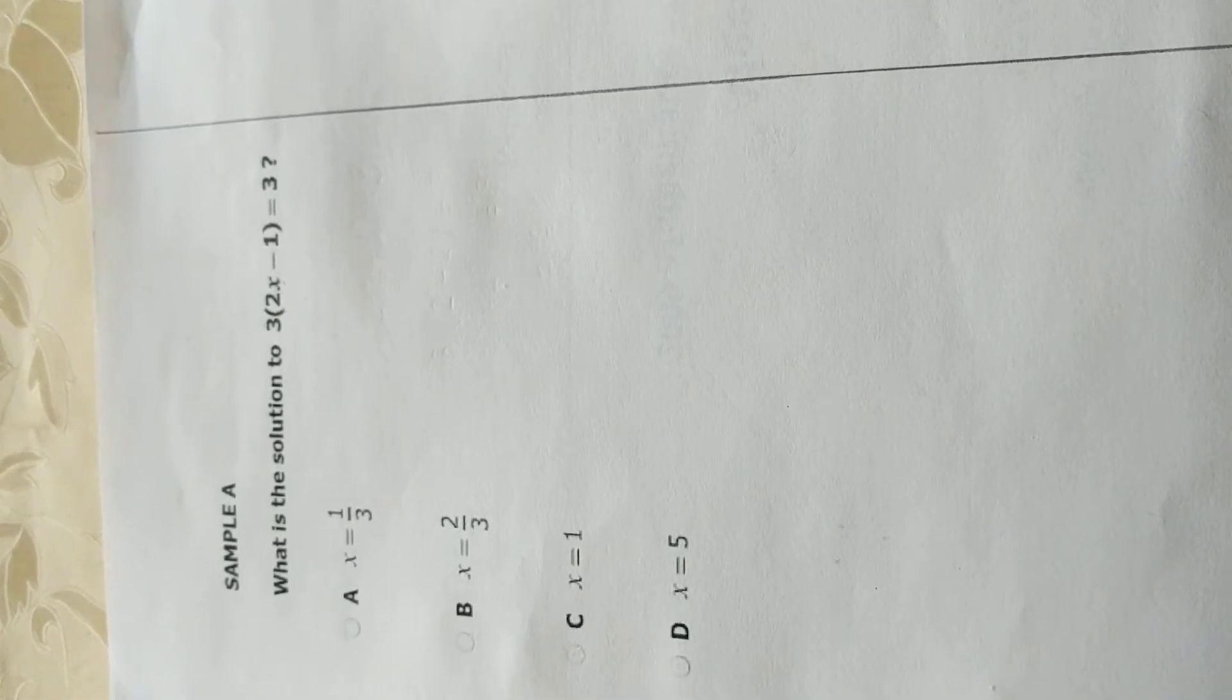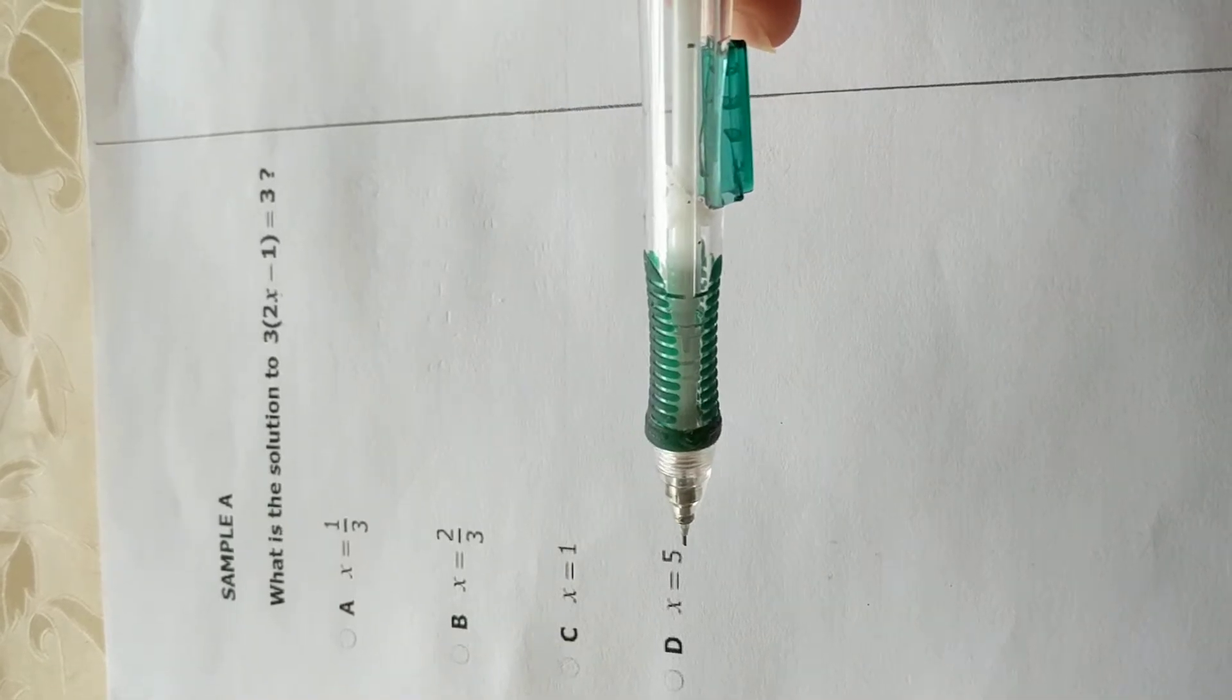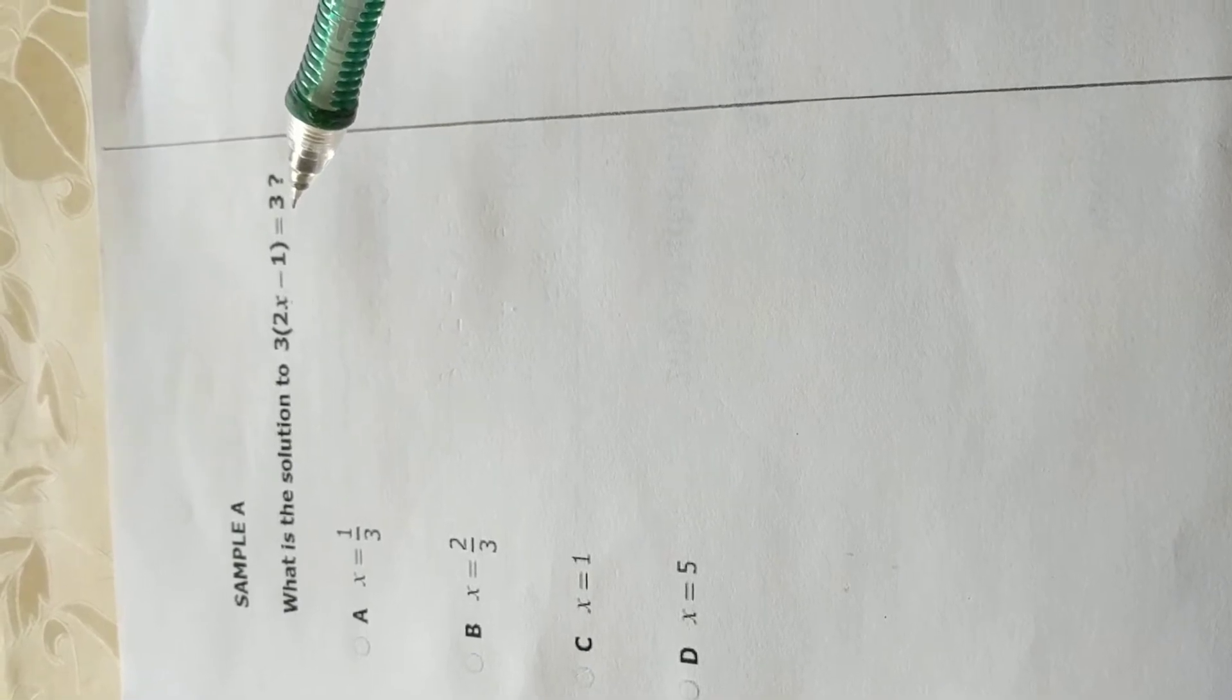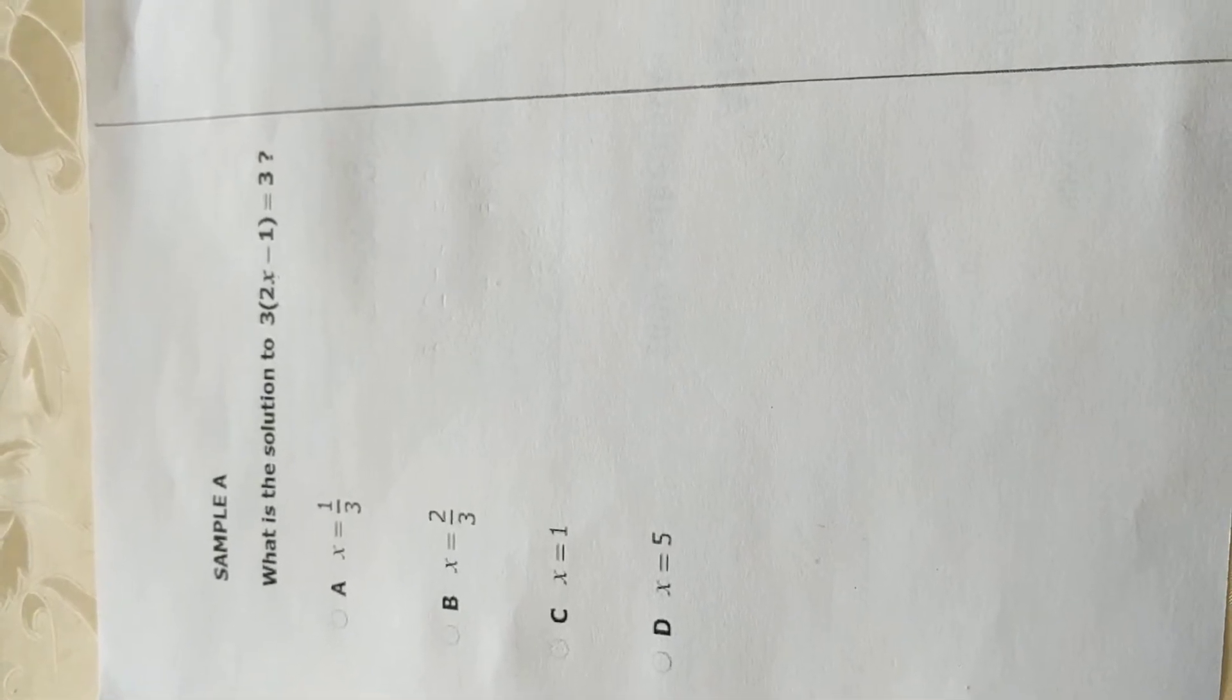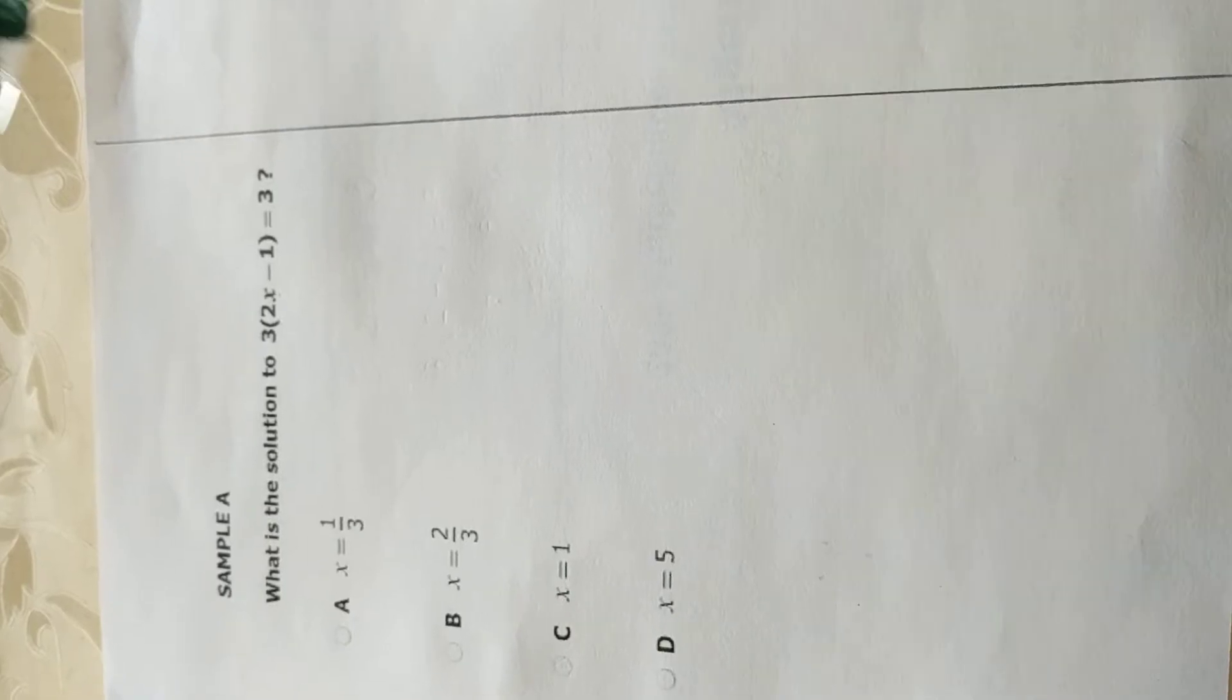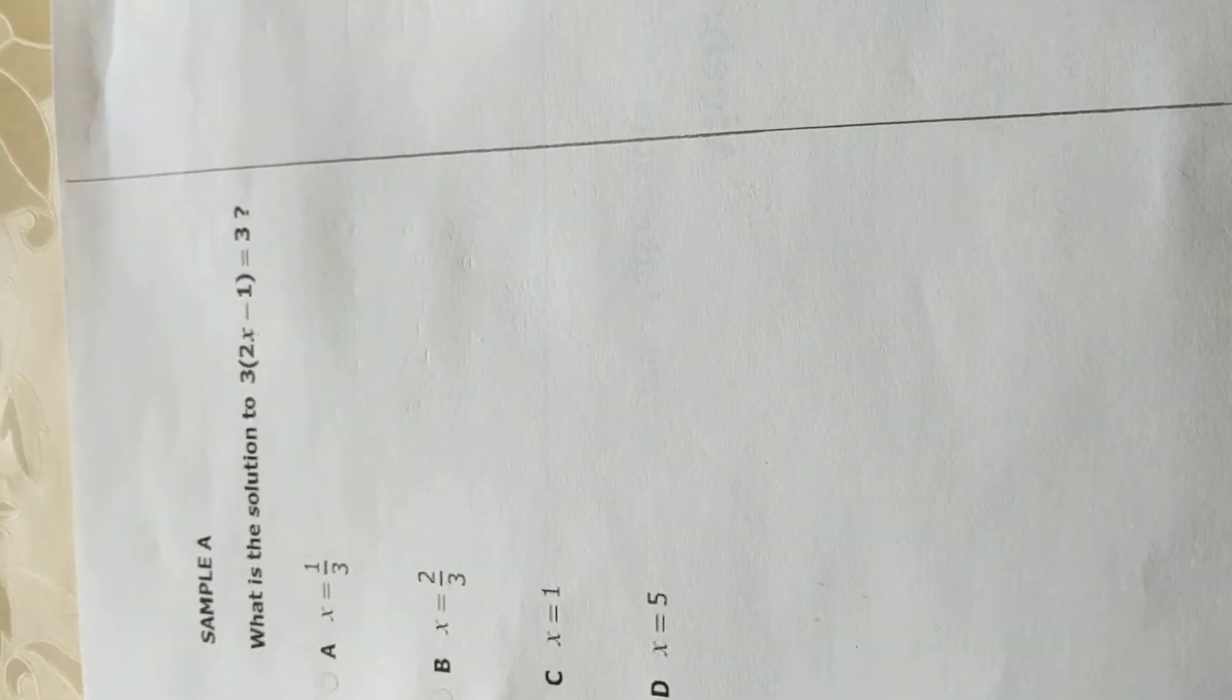Now, the easiest way on a test would be to plug in each value for x that's listed to check if left-hand side and right-hand side of the equal sign match. But we also need to understand where we are getting the solution from instead of just choosing an answer. In order to do so, we would actually have to solve this equation for x.